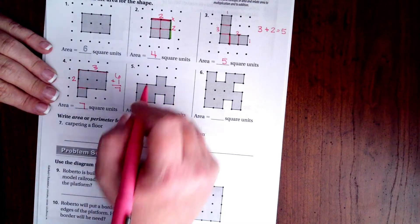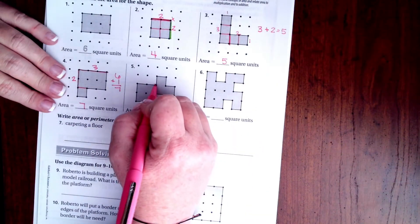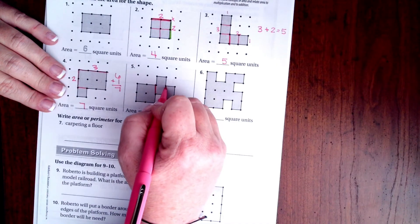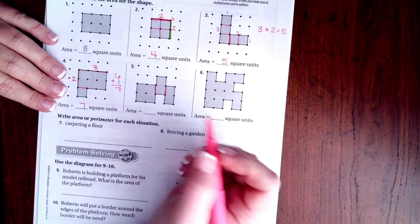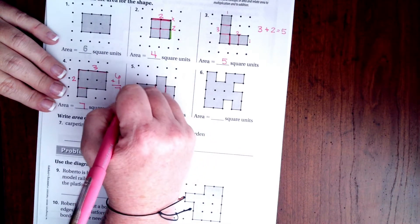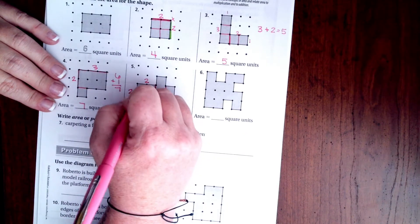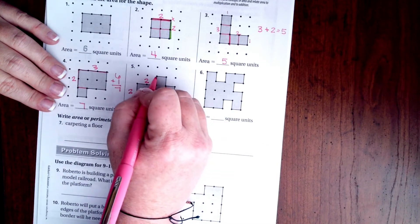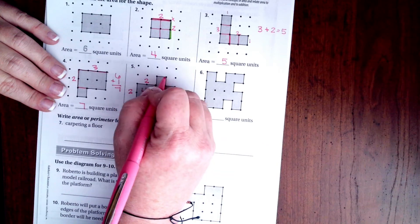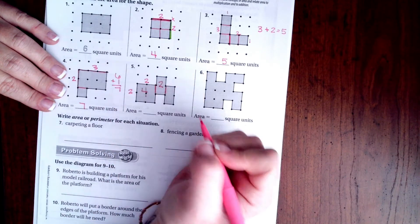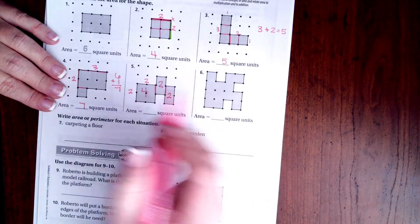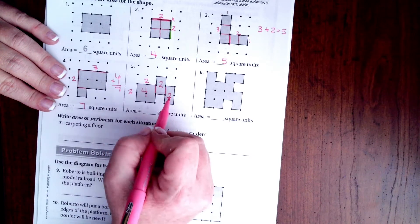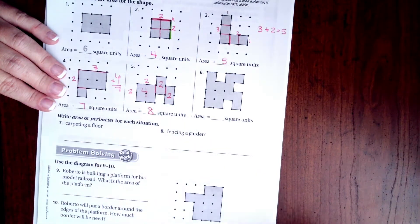So now, this one is a little bit weird, so I'm going to cut it up. Now I have this block, this block, and this block. So this block, I have 2 here, and 2 here. That gives me 4. I have 1, 2 going down, and 1 across. 2 times 1 is 2. And I have the same exact shape here. That's going to be another 2. So 4 plus 2 is 6, plus 2 more is 8.